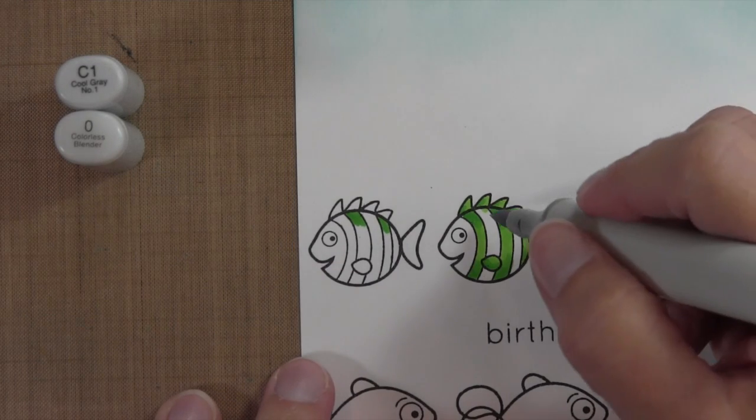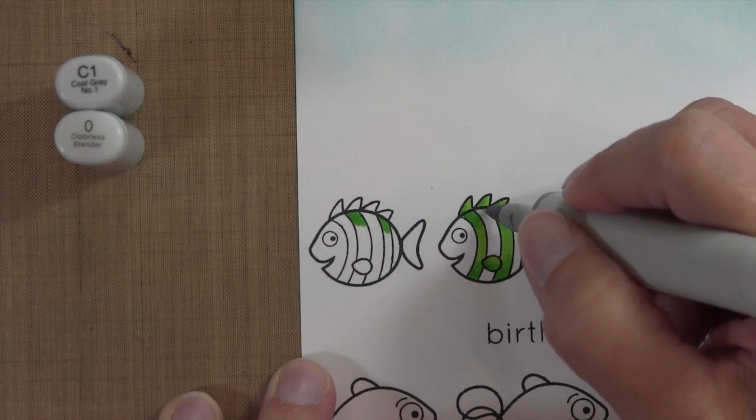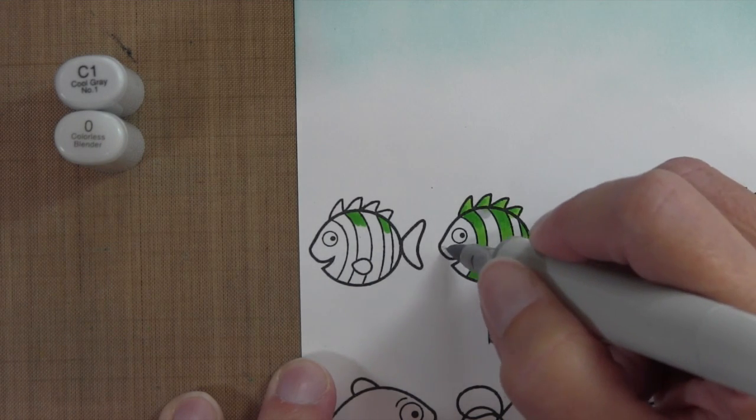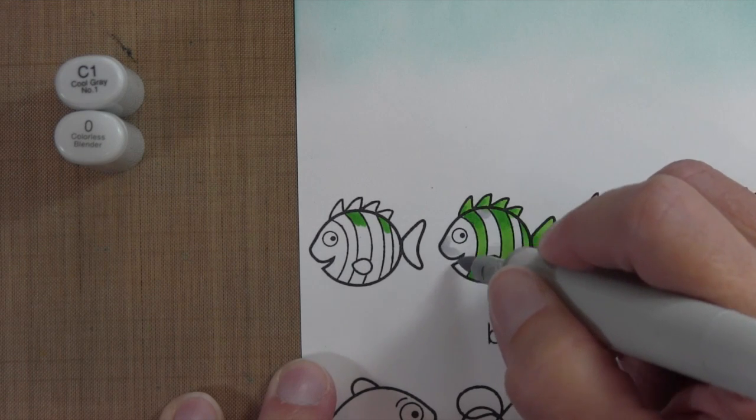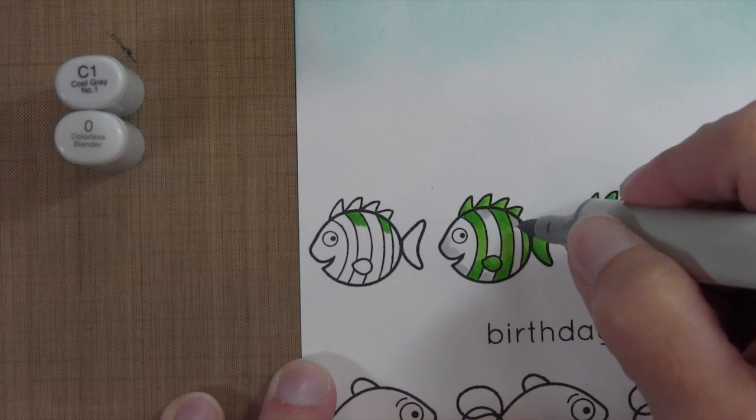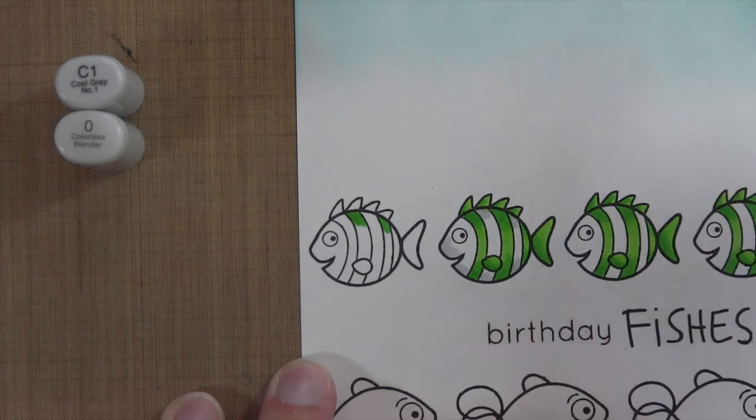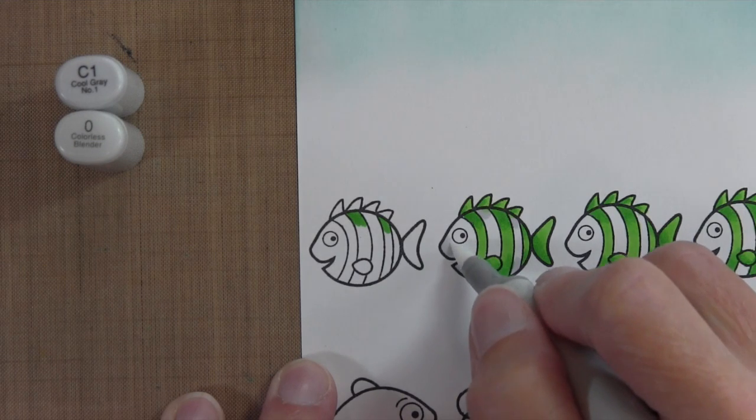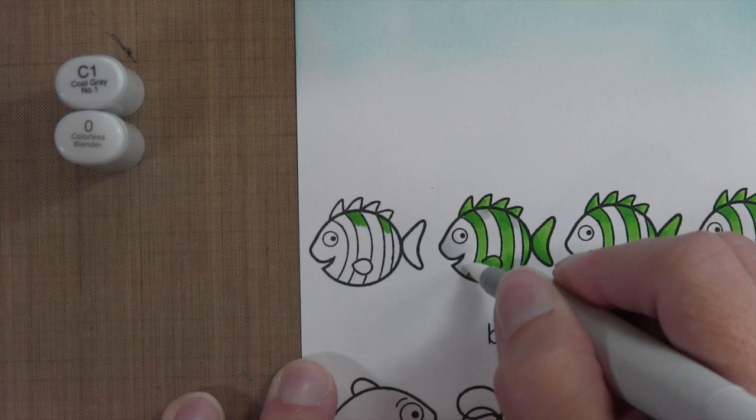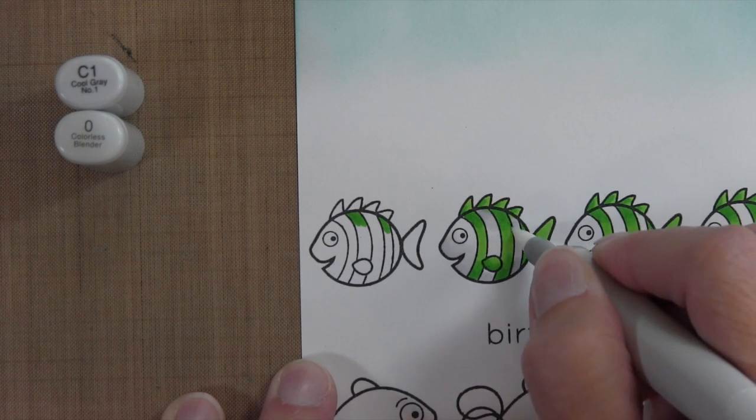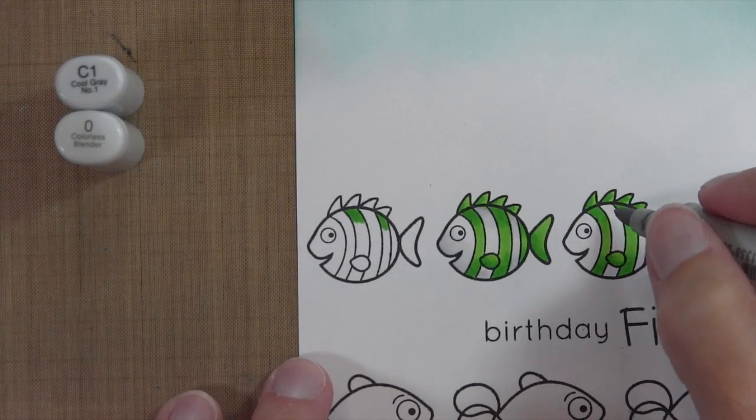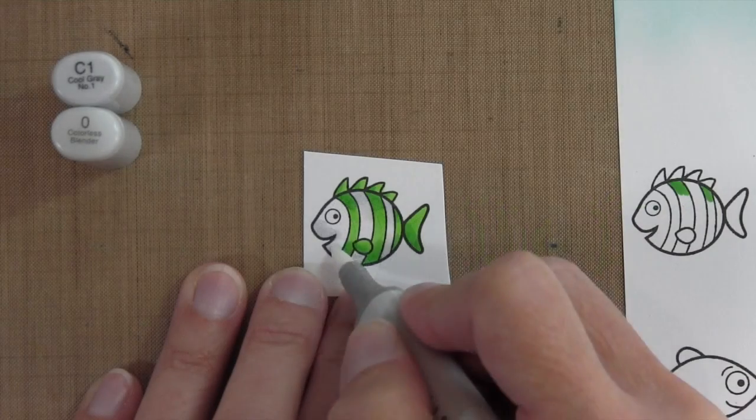For the white areas of the fish, I wanted to give it still some dimension even though it's just white, so I took my C1, which is a very cool light gray, and I colored in the top and bottom portions of the fish and underneath kind of his nose and under his mouth there a little bit. Once I'm done with the C1, I'll take a zero and what that'll do is blend the line where the C1 ends and push that C1 to the edge so that it gives it a nice shaded perspective without really changing the color from white. I'm going to do that on all these fish, including the one that I stamped separately.